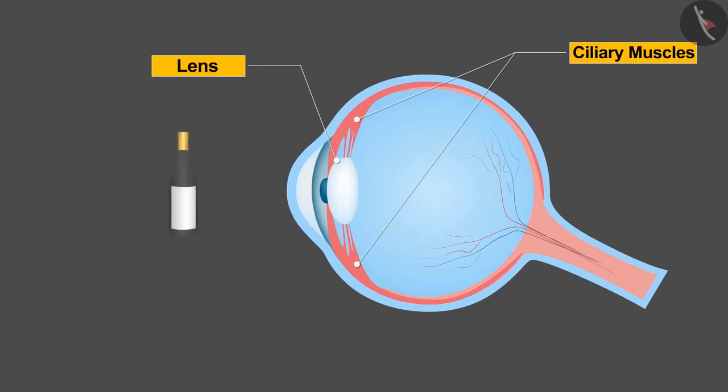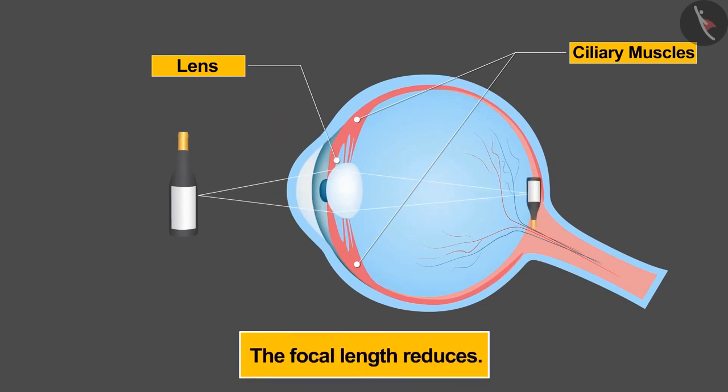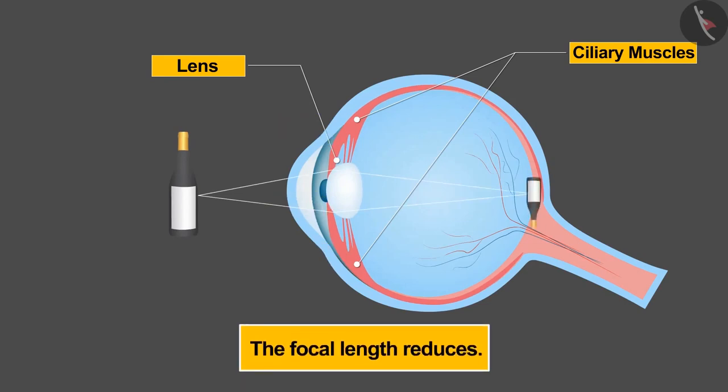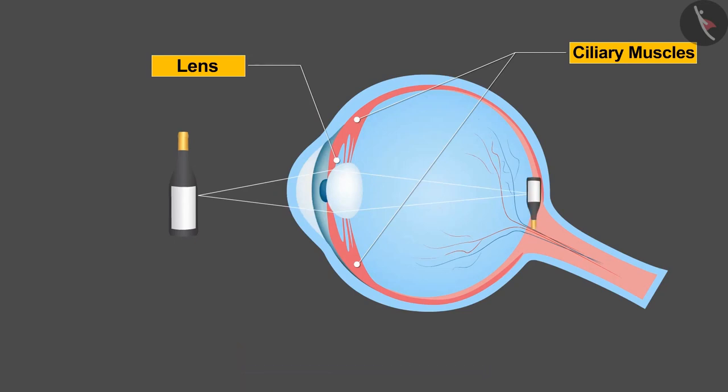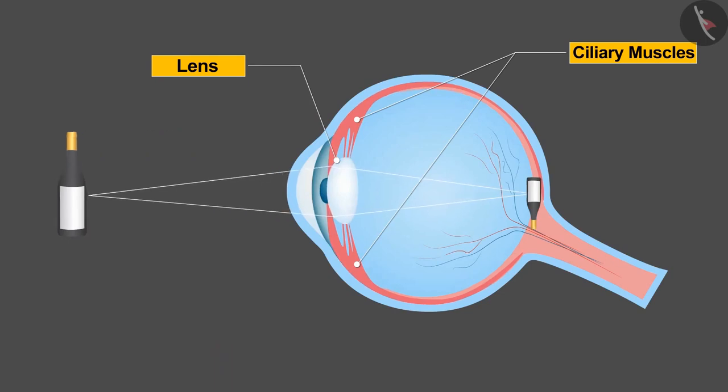In order to see a nearby object, the ciliary muscles contract, then the lens becomes thicker and the focal length reduces, and we are able to see the nearby objects comfortably. In the second case, the ciliary muscles get relaxed, which makes the lens thinner and the focal length increases, which helps us to see the distant objects clearly.